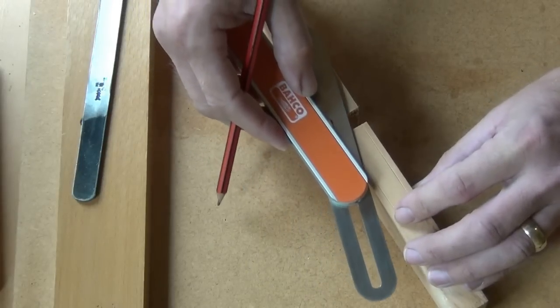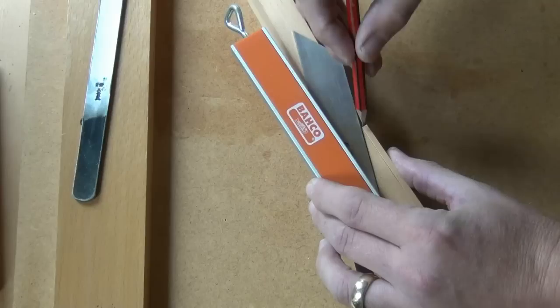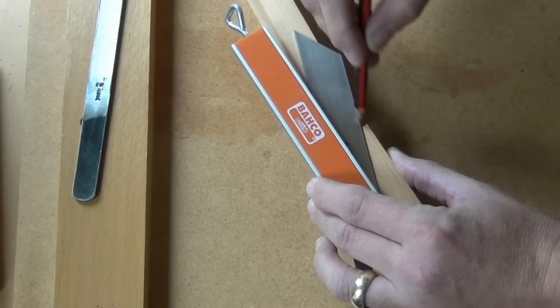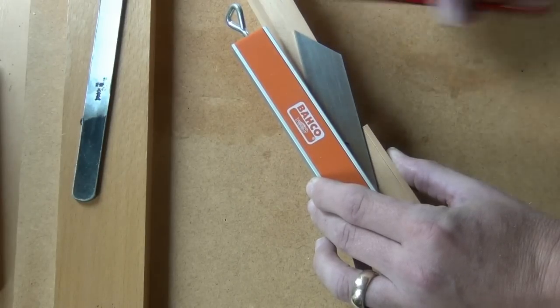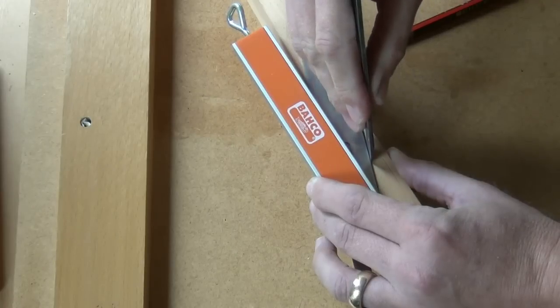Slide the bevel gauge down to the opposite component, align it with this step here opposite the face edge this time, mark it and knife it.